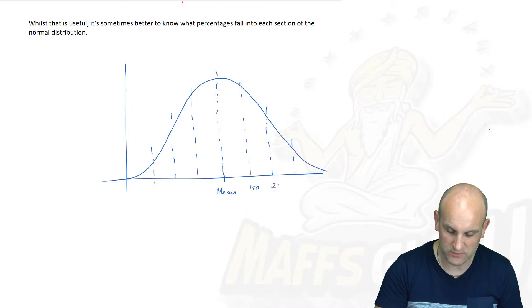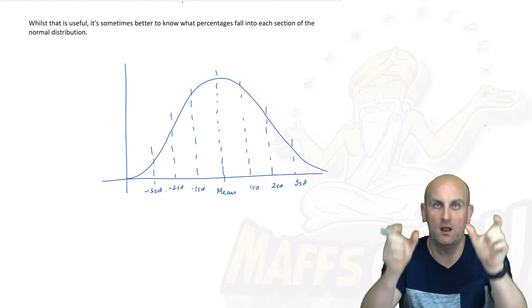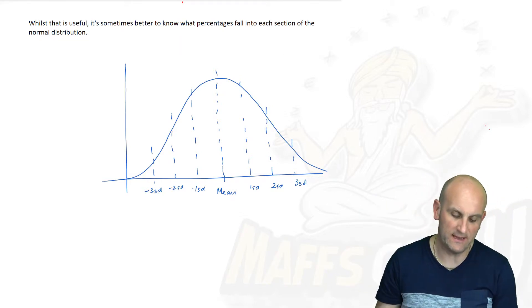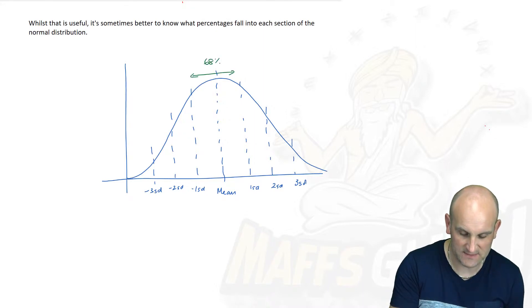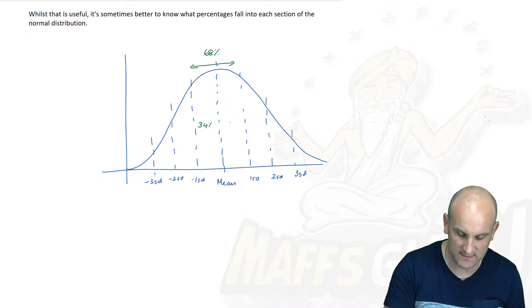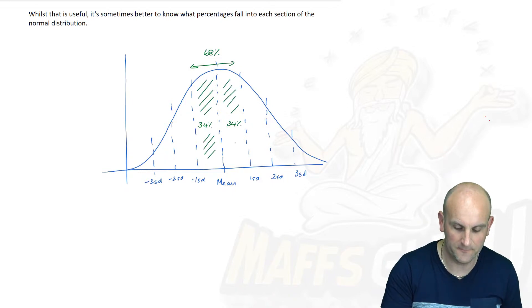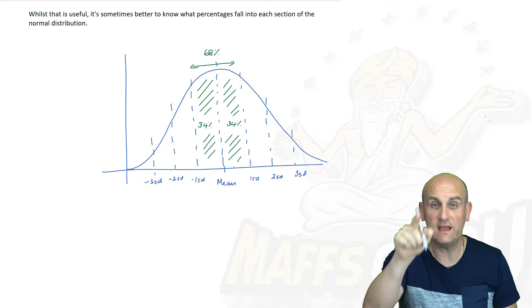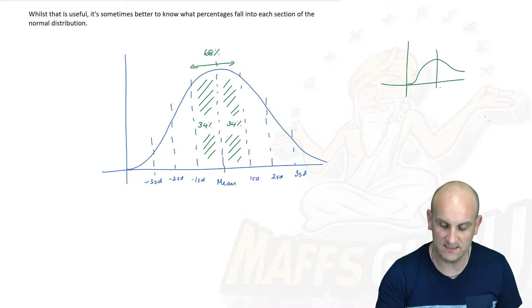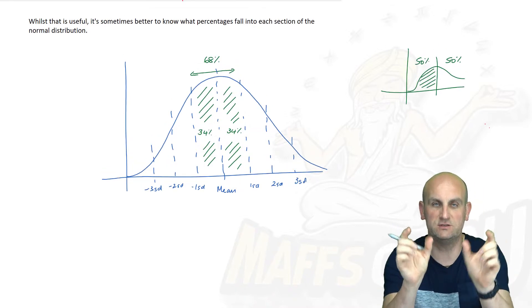Here we have my value of my mean, here we have my first standard deviation, two standard deviations, three standard deviations, minus one, minus two, and minus three standard deviations. Now we're going to work out what percentage of data lie between each of those dotted lines. We know between here and here is 68%, and because those two sections either side of my mean are equal, that means this section here is 34% and that section there is also 34%.